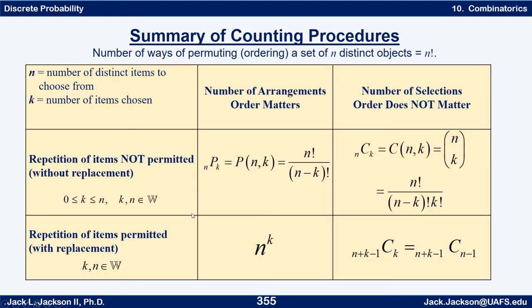So the number of ways of permuting or ordering a set of n distinct objects is n factorial. Now this table here collects four other counting arguments. Everything in this table, n is the number of distinct items to choose from, k is the number of items that are chosen.